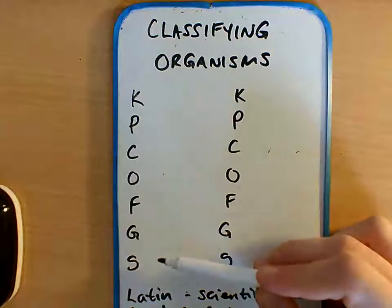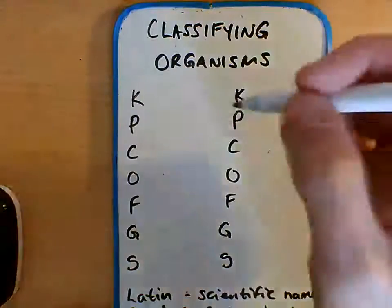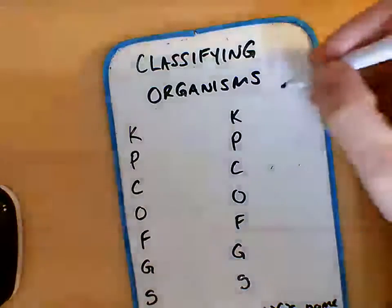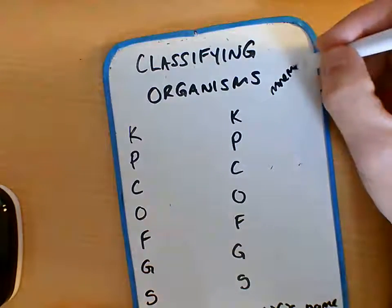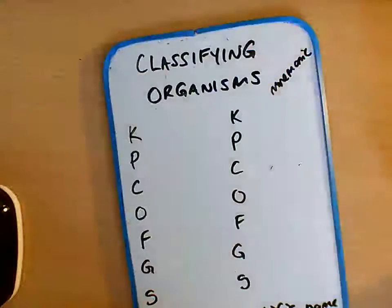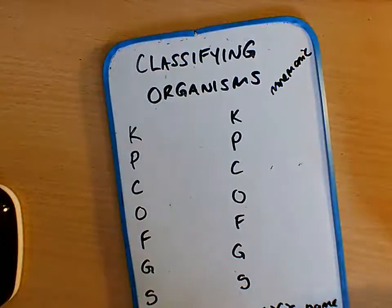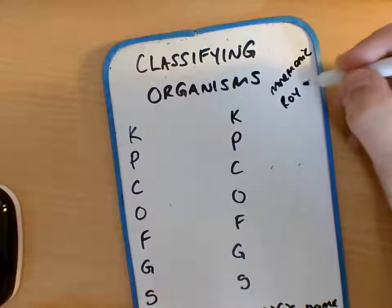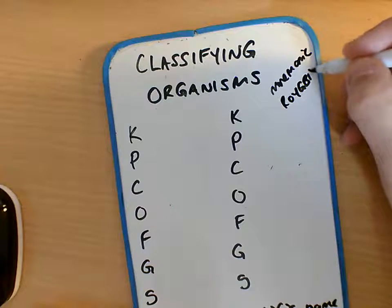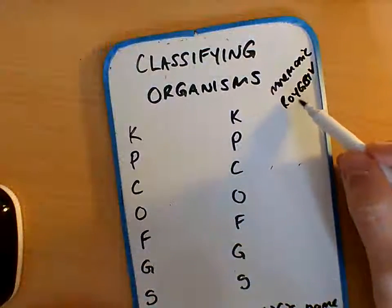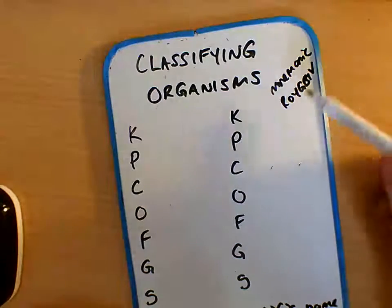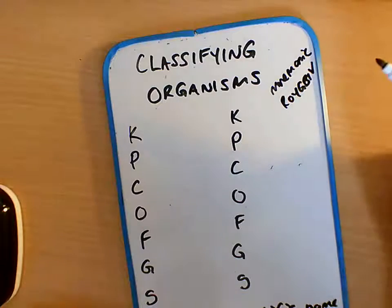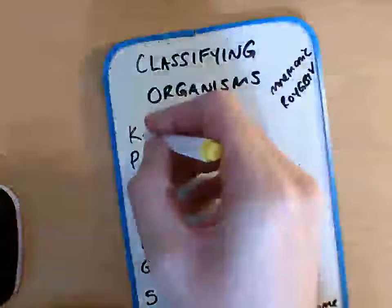We work our way down to the individual species at the bottom. There's a little rhyme to help you remember — this is called a mnemonic. You may have come across this term in English, where you create a rhyme to remember a difficult sequence of terms. A common one is 'Roy G Biv' — Richard of York gave battle in vain — for the colors of the rainbow: red, orange, yellow, green, blue, indigo, violet.